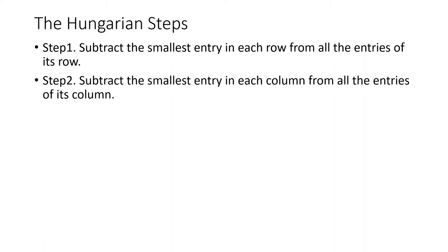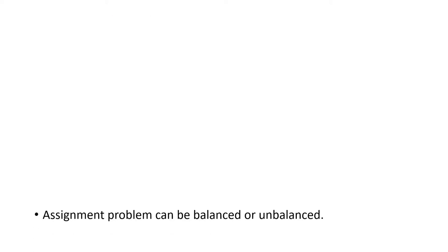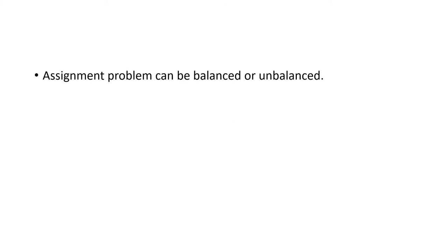Secondly, subtract the smallest entry in each column from all the entries of that column. Thirdly, make sure each row and column has at least one zero. The fourth step is to look for the optimum solution. Once you get through all these steps, you will be able to get the final entry.